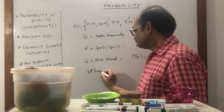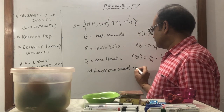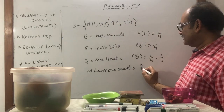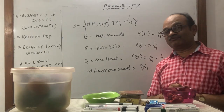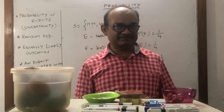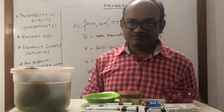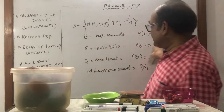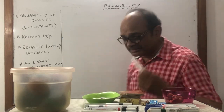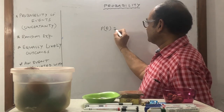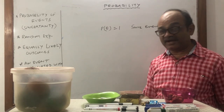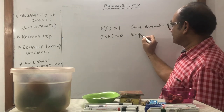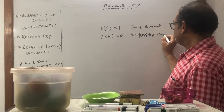At least one head means one head or two heads — favorable outcomes are HT, TH, and HH — answer is 3 by 4. For homework: at most two heads means zero heads, one head, or two heads are all acceptable — answer is 4 by 4. This is called a sure event. Probability of a sure event is 1 — it is 100% certain to occur. If an event can never happen, probability is 0 — that is called an impossible event.